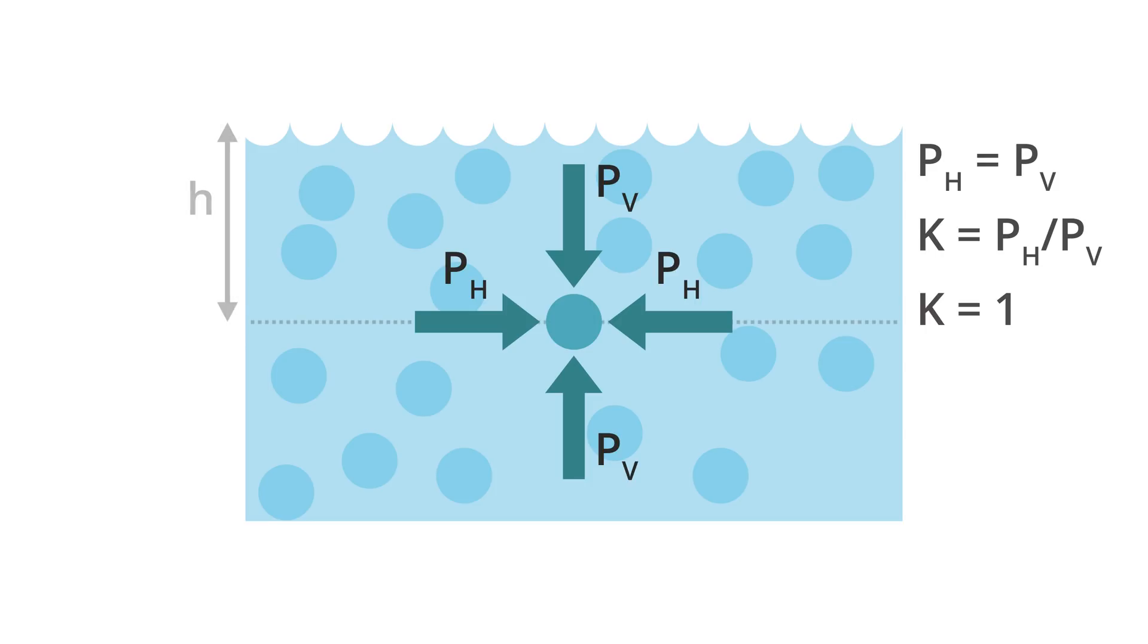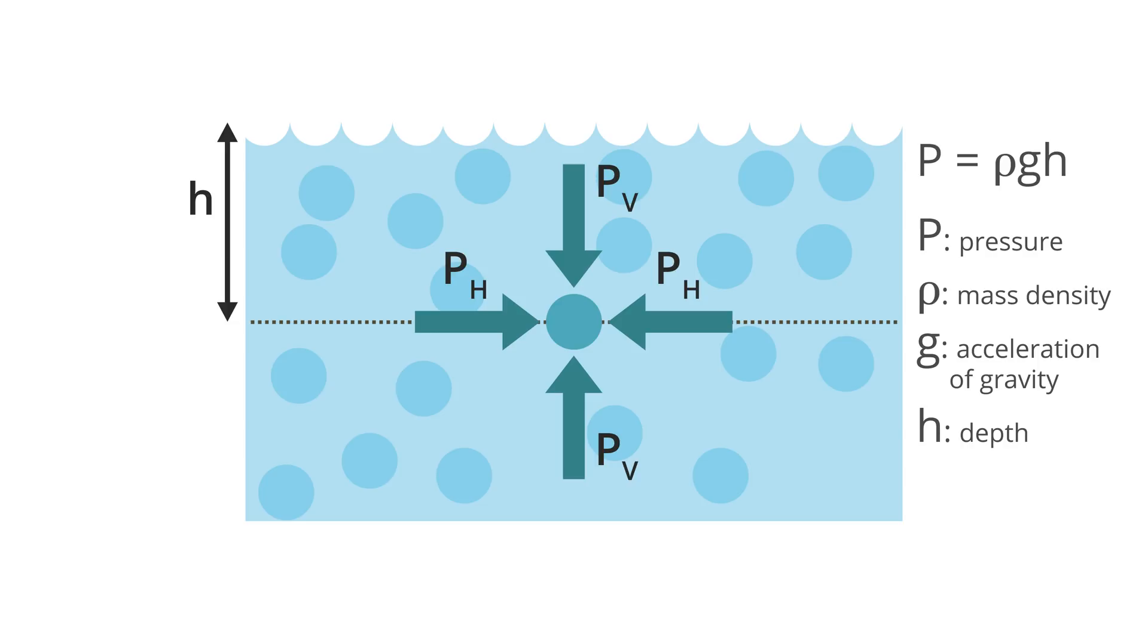Liquids represent the other end of the spectrum. Experiments show that liquid pressures are the same in all directions, and so k, the ratio of the horizontal and vertical pressures, takes on a value of one. In that case, we simply write that the pressure, p, acting in any direction at a particular depth, h, is equal to rho, g, h.